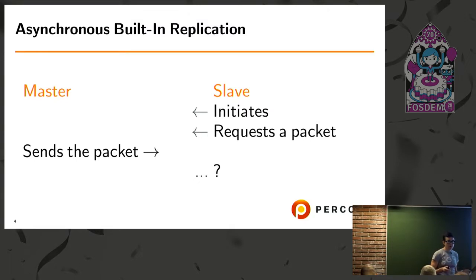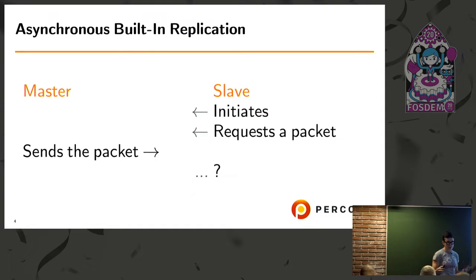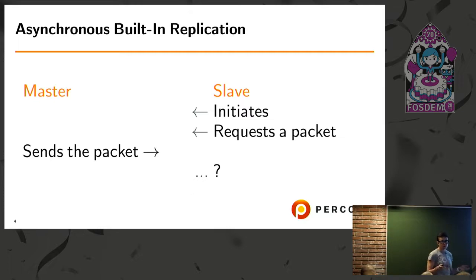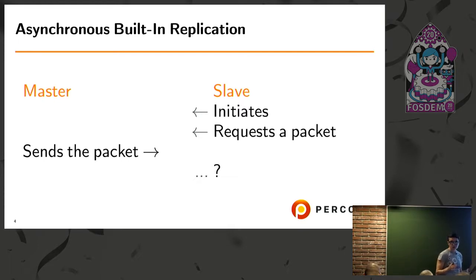In the first versions of MySQL, there was only statement-based replication, so statements were executed the same way on the slave. In version 5.1, we got row-based replication, where MySQL ensures that exactly the row you want to update is updated using the primary key to identify it. In version 5.6, we got global transaction IDs (GTIDs), which also prevent users from applying the same transaction twice. But it still doesn't answer the question — we still don't know if the replication was successful.